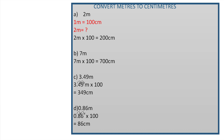And the last one: 0.86 metres. I want you to try this, students. Yes, you multiply it with 100. The decimal point again here will move two places towards the right. So your answer is 86 centimetres.